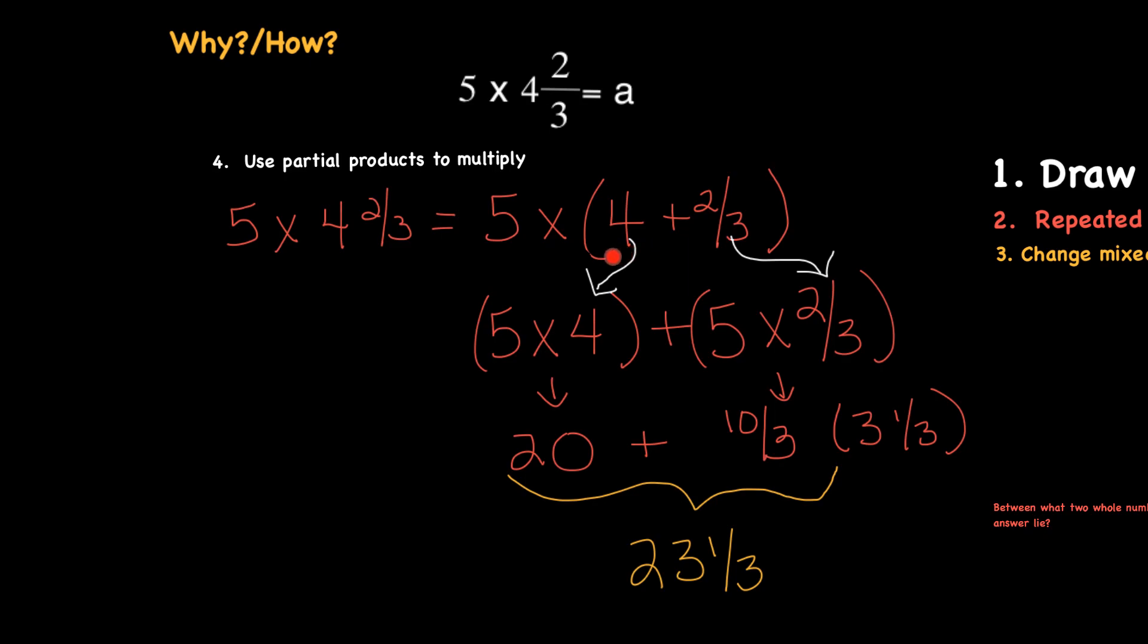So here's my whole number, 4, and here's my fraction part of that mixed number, 2 thirds. So I've got that in parentheses just to kind of separate it out. And then I'm going to move that 4 down here, and I'm going to actually multiply it times the 5. I'm going to move the 2 thirds below that and multiply that times the 5. And we're going to add those together eventually.